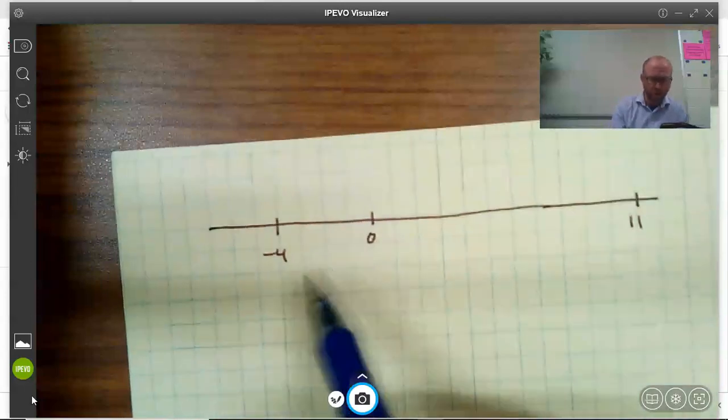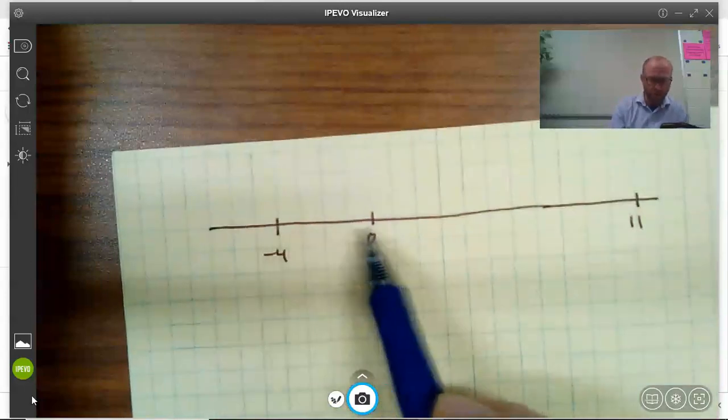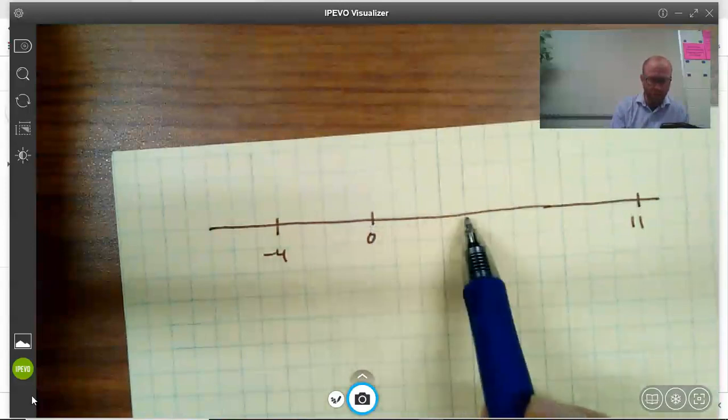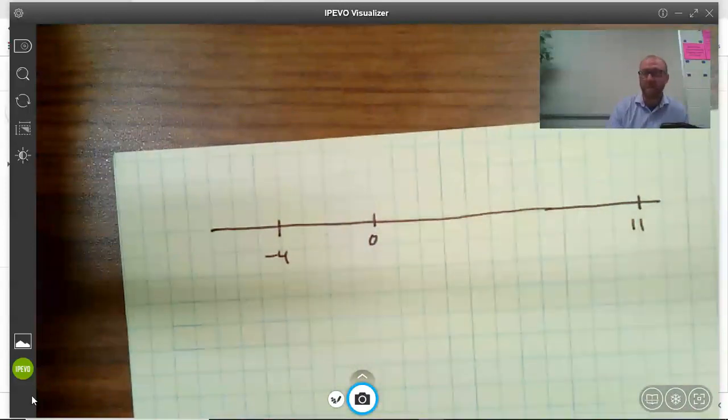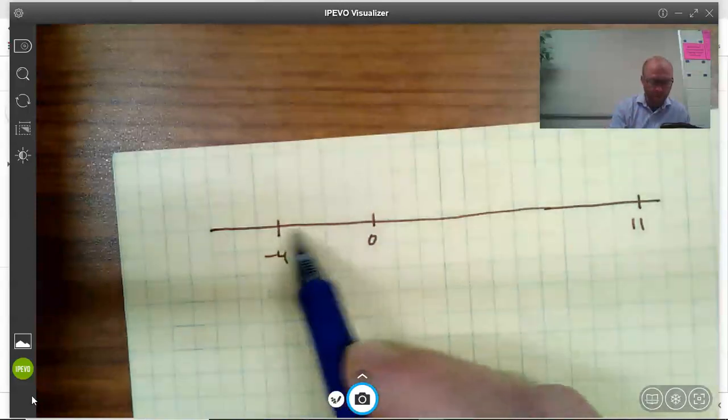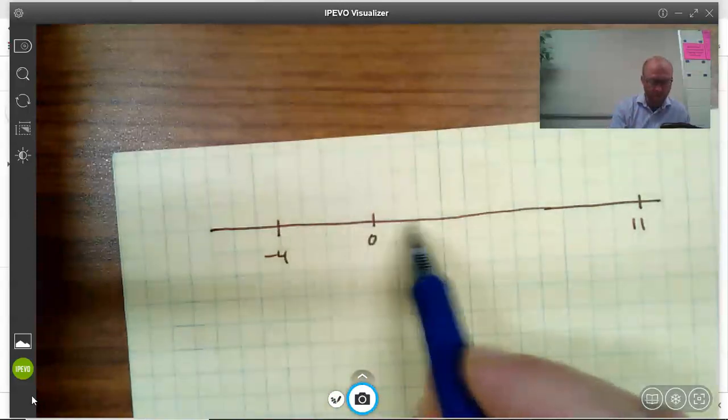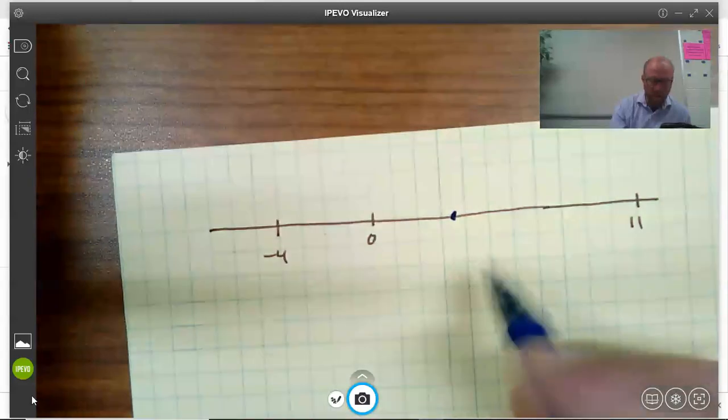Let's see, how far is it from negative 4 to 11? It's 1, 2, 3, 4, 5, 6, 7, 8, 9, 10, 11, 12, 13, 14, 15 spaces. So half of 15 spaces would be 7 and a half spaces. So 1, 2, 3, 4, 5, 6, 7 and a half right here.